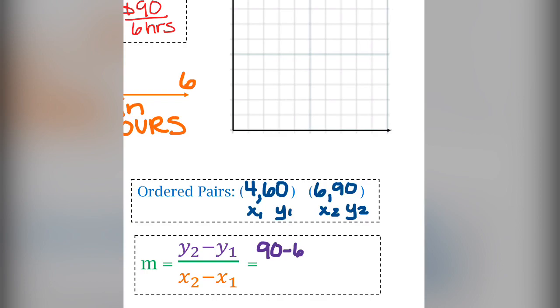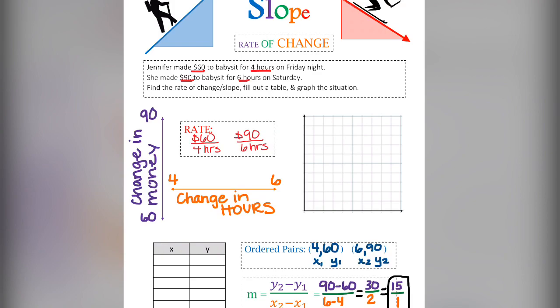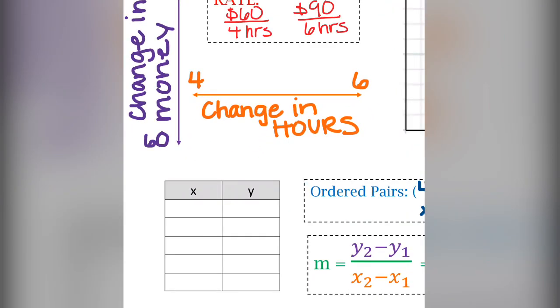So we know it's 90 minus 60, that is the change in y. And 6 minus 4, that is the change in x, just like the last picture. This will give us 30 over 2. Put that in simplest form and get 15 over 1. Yes, that's equal to 15, but we want to keep it in that ratio format, $15 to 1 hour.